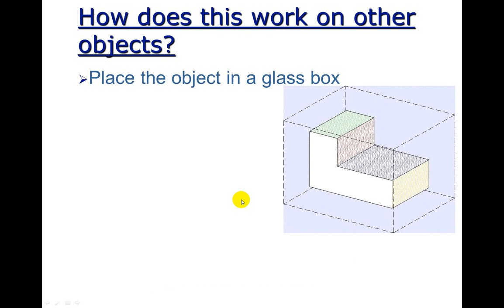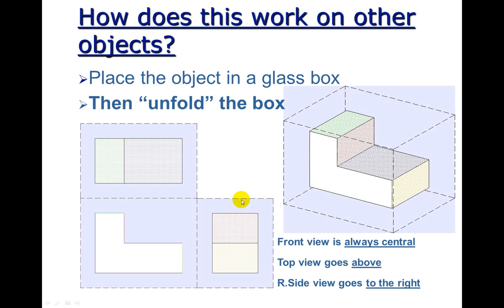So how does this work on the other objects? I place the object in the glass box. Then unfold the box. Again, look at this where I have an object line here because I have an edge. Change in depth also one here. If I turned it to the left, I would have a hidden line on the back or the left side because I have a change in depth on this side. It shows that something was cut out.